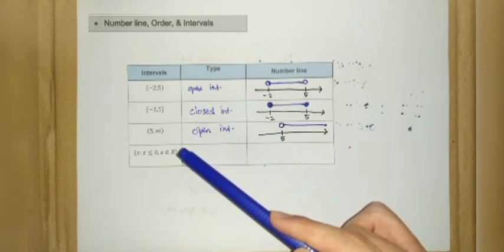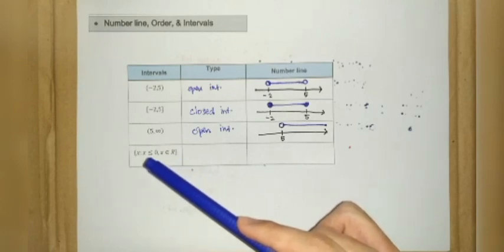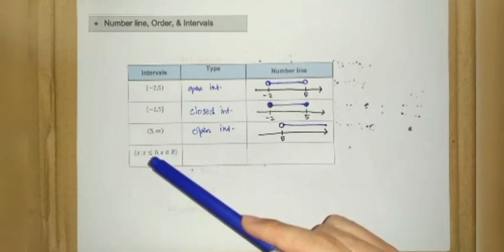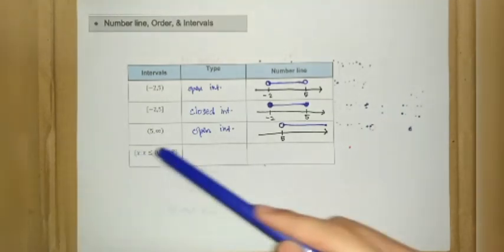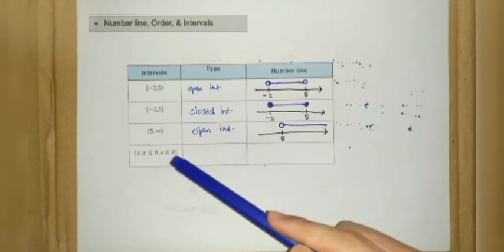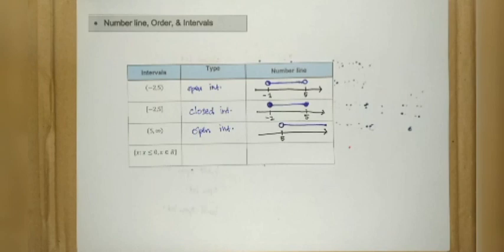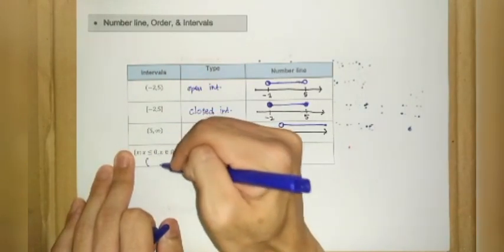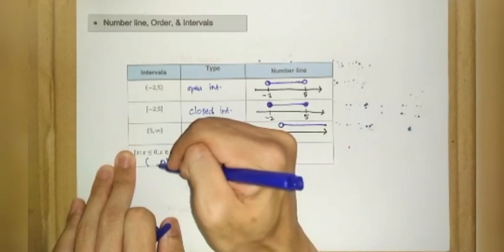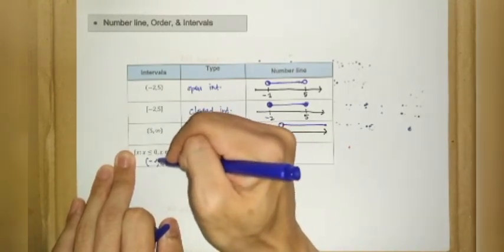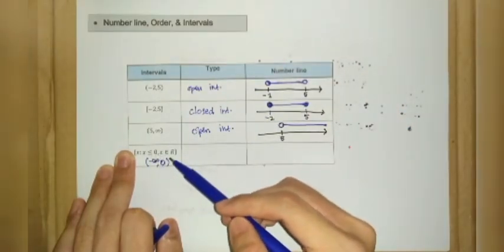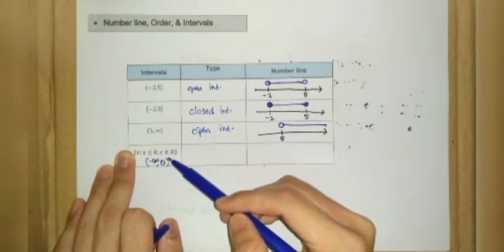In set notation, x is any number that takes values from 0 down to negative infinity, and x is an element of the real numbers. In interval notation, this is written from 0 to negative infinity. Since 0 is included, it should have a box bracket.